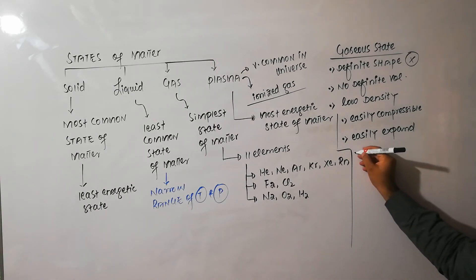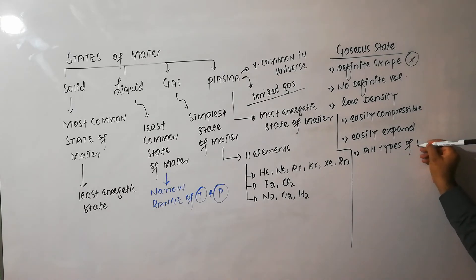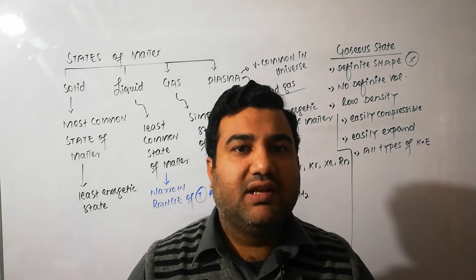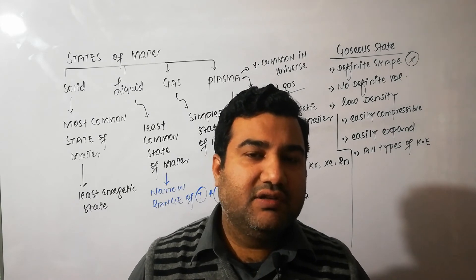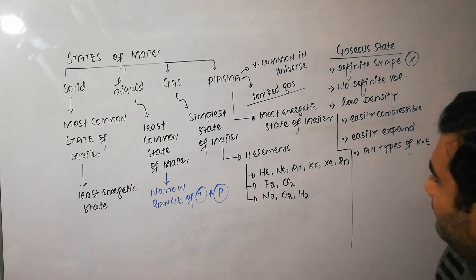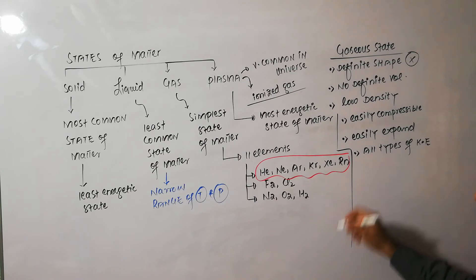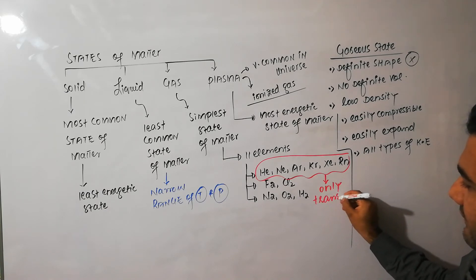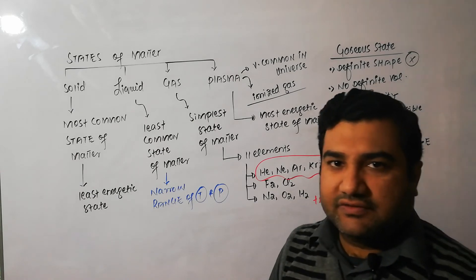Similarly, gases have all types of kinetic energies. If the gas molecules are polyatomic, they possess translational or linear kinetic energy because of their translational motion, rotational kinetic energy because of rotational motion, and vibrational kinetic energy because of their to-and-fro motion. However, noble gases are monoatomic — their molecules are monoatomic — so they have only translational kinetic energy. If gases are polyatomic, then they possess all types of kinetic energies.